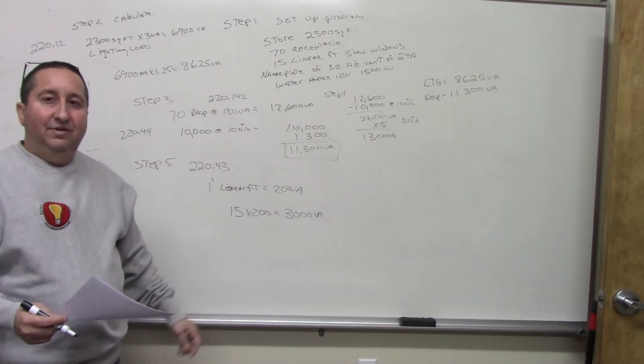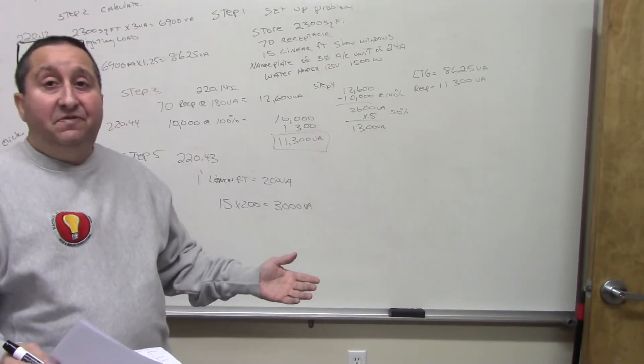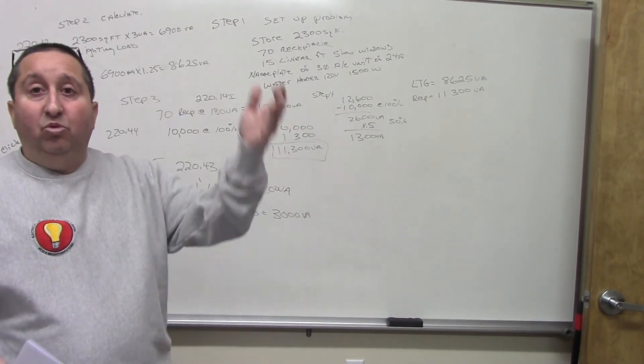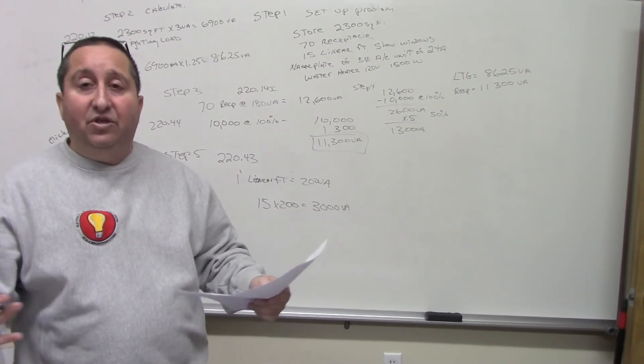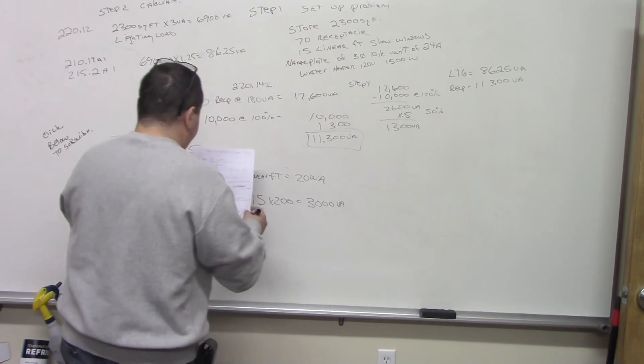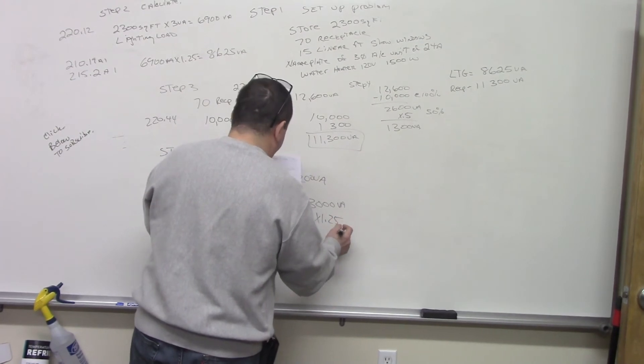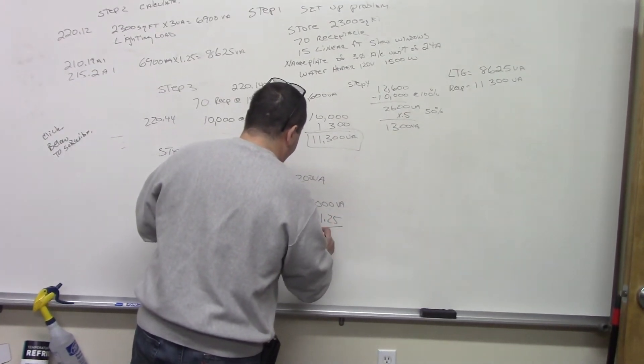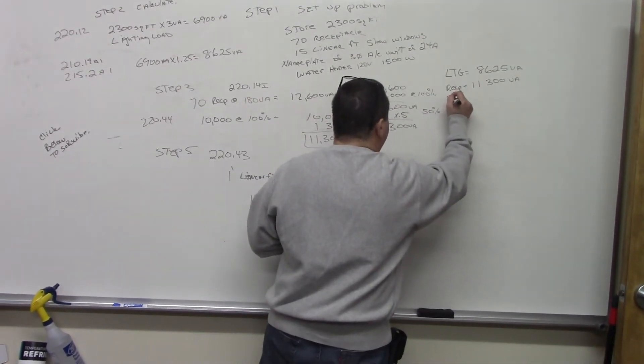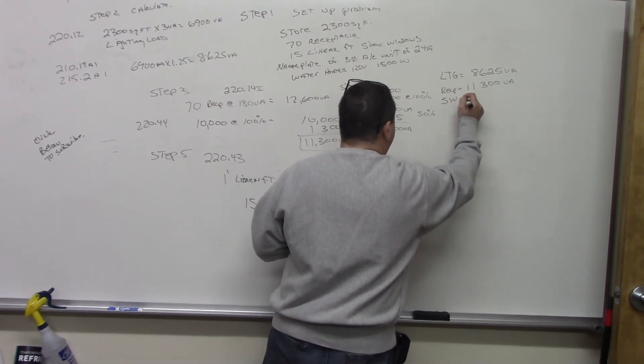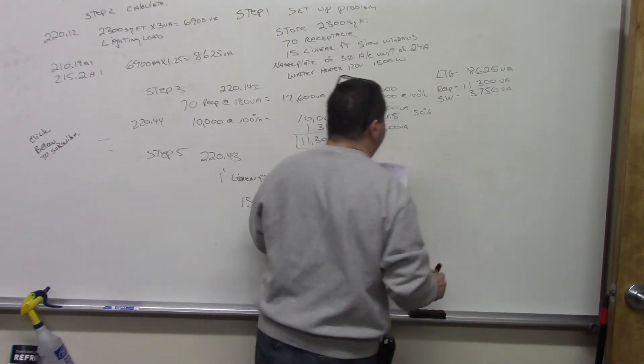But, we do have a problem. Are these show windows going to be on more than three hours? They might have a timer. And it goes on at 6, 7 o'clock, and it goes off maybe 2 o'clock in the morning. It's a store. It's a commercial. Usually, show windows are always more than three hours. So, we're going to take this number, and we're going to times it by 1.25, which is 3,750 volt amps. So, I'm going to put show windows, which equals 3,750 volt amps.